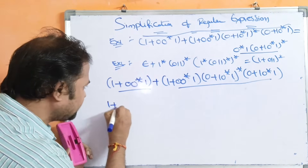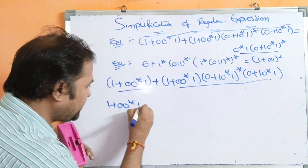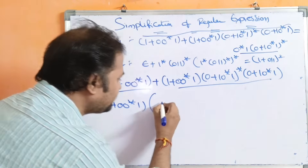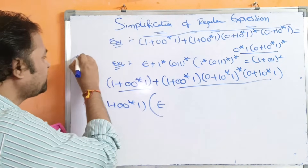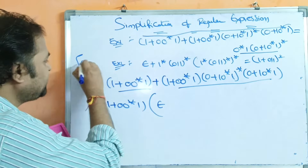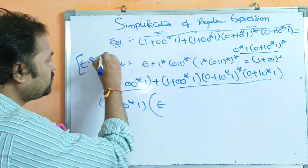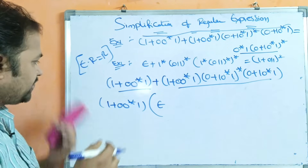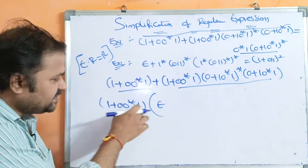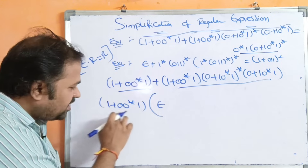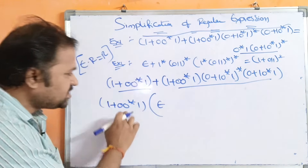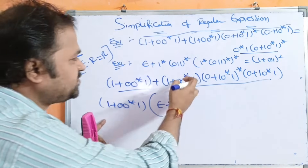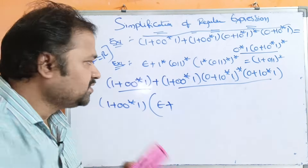Factoring out (1 + 00*1) as the common term, from the first term we get epsilon, because we have the formula ε · R = R. So, epsilon into R is equal to R. When we common this term out, we get epsilon here, and ε · R = R gives back R.